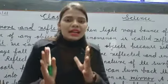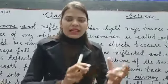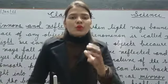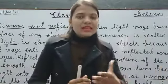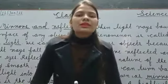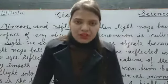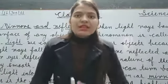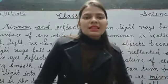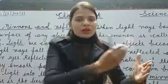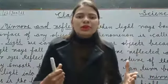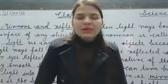Light ki jo rays hoti hain, wo jab bounce off hoti hain kisi bhi object ke surface par, us phenomenon ko kehte hain reflection of light. Yani ki jab light rays takrati hain kisi bhi object ke surface pe aur takra kar waapas aati hain — bounce off hona, takrana — us phenomenon ko hum kehte hain reflection of light.